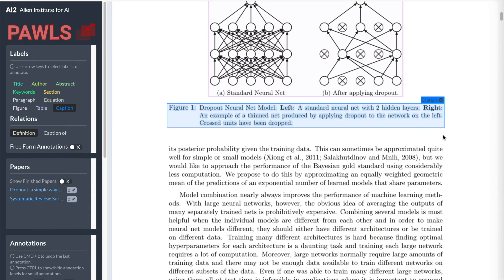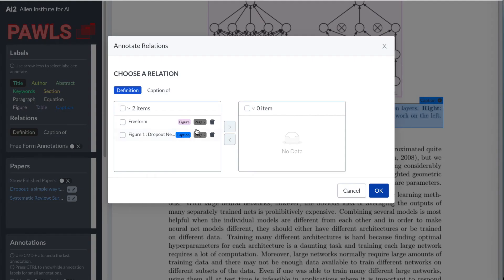We also provide the functionality for relating text boxes, which are used for NLP tasks like question-answering. To label relations, simply hold the shift key and select the relevant boxes. A relation creation panel will automatically show up. Choose the relevant boxes and the relation type to group them together.